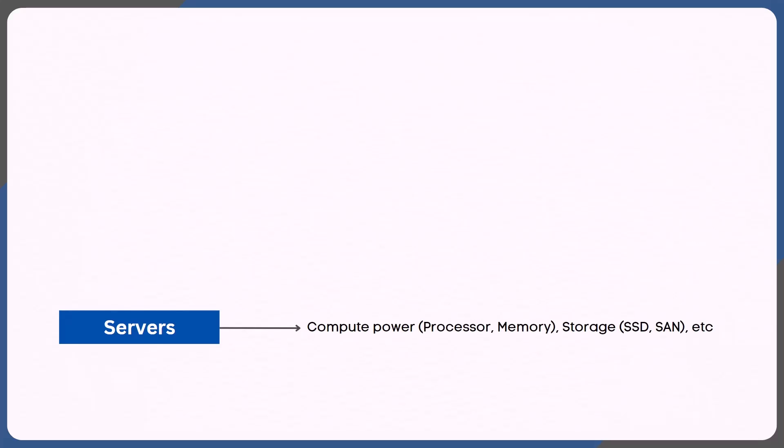Here are all the steps I'm going to follow to have the infrastructure in place. First of all, I'm going to procure the required servers — by servers I mean compute power like processor, memory, and storage like storage area network, SSD, etc., depending on your needs. Once I have the servers, I can install an operating system.